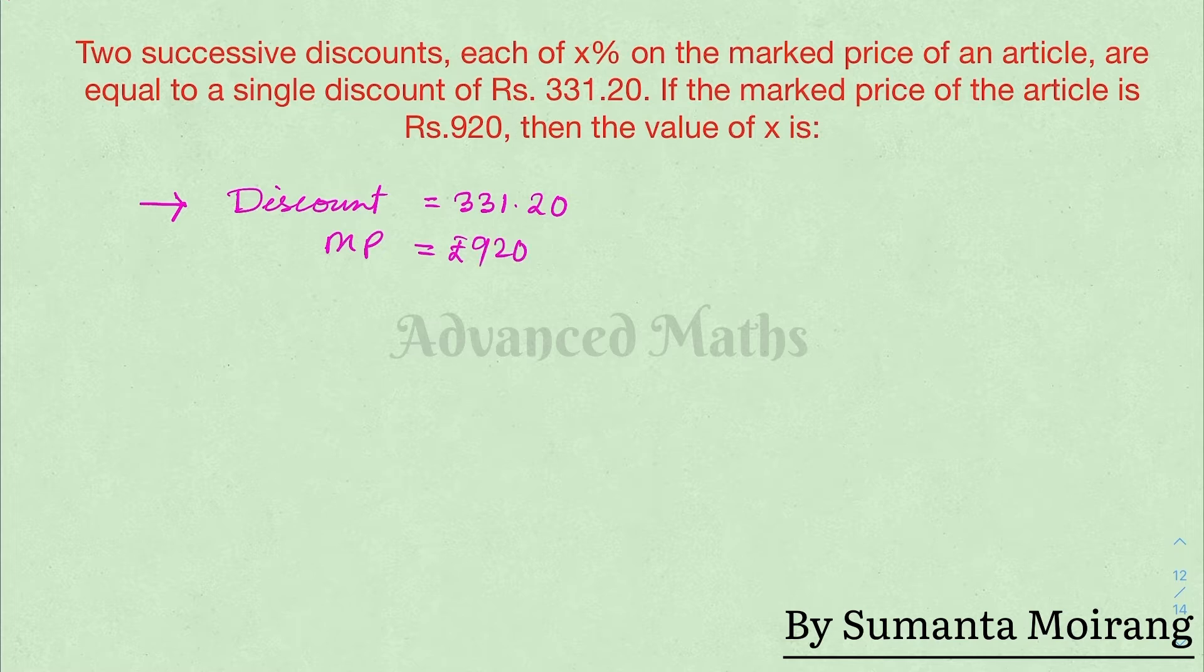Using the discount percentage formula, discount divided by marked price, 331.20 divided by 920, multiplied by 100.